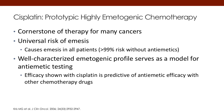Cisplatin has for the longest time been the prototypical highly emetogenic agent. It is the cornerstone for all antiemetic therapies that get tested for their effects in highly emetogenic chemotherapy, and those studies are always done in patients receiving cisplatin. The rate of emesis is almost 100 percent, making it relatively easy to demonstrate efficacy for patients who do not vomit after receiving cisplatin.